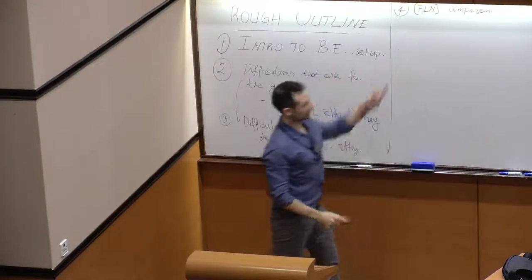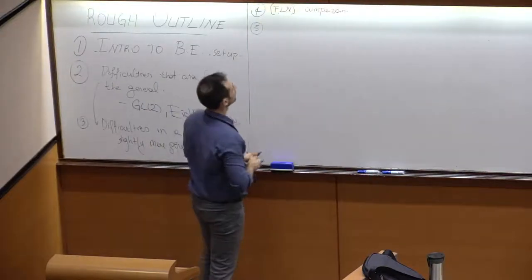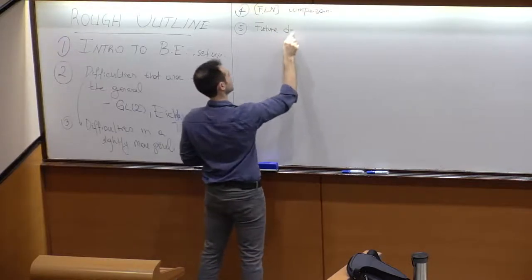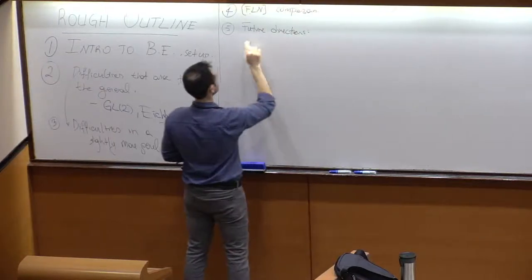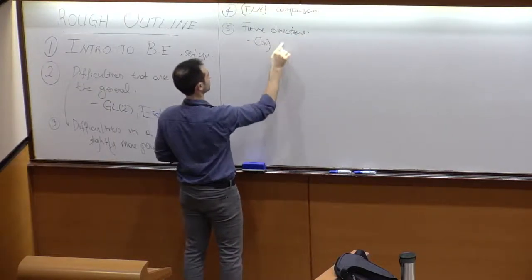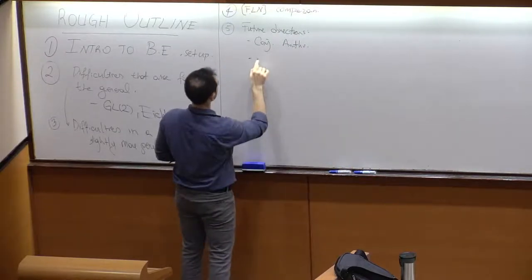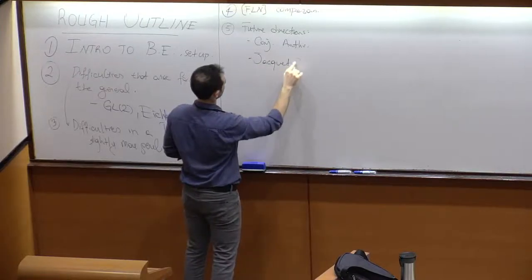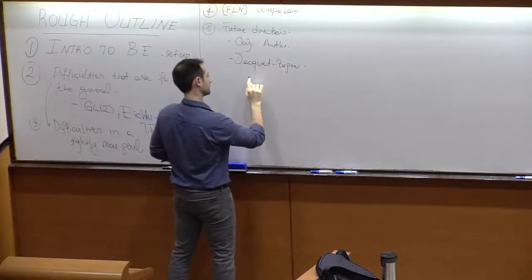Part of the general difficulties don't arise in the GL2 case, so you can go straight down into the main problem. After discussing issues there, I'll go back and talk about these difficulties in a slightly more general setting, allowing a more general test function in the trace formula. Once that is done, I'll compare our approach with the somewhat famous paper of Langlands, Frenkel, and Ngô.